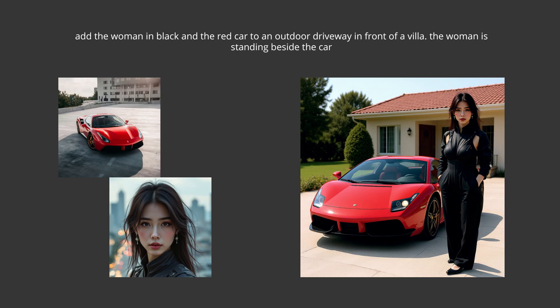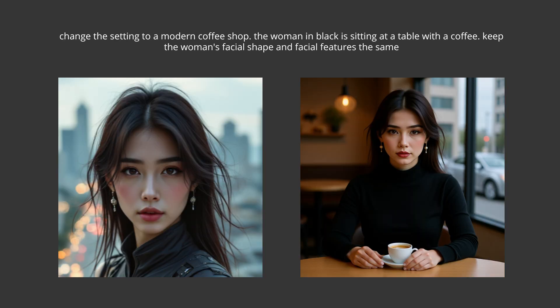Another test was merging two reference images into one scene: add a woman in black and a red car to an outdoor driveway in front of a villa, with the woman standing beside the car. It did put them together in the same scene, but the scale looks off — she's very big compared to the car. A lot of people seem to be having this issue with Context too. Then there was a scene change using a reference image: change the setting to a modern coffee shop, the woman in black is sitting at a table with a coffee, keep the woman's facial shape and features the same. It kind of did that, but the face seems to have defaulted to a generic Flux image generation face. This one needs more prompting and testing.